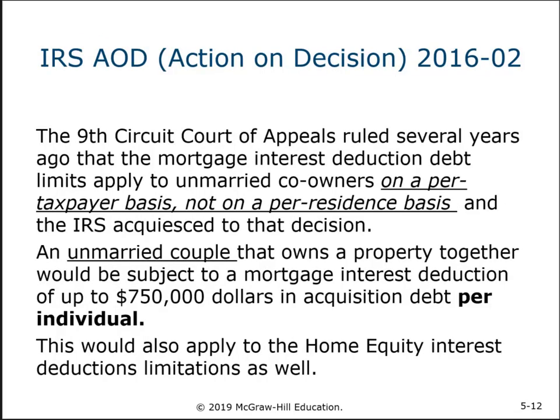The IRS has been held by the courts that the $750,000 limit is on a per-taxpayer basis. So an unmarried couple that owns property together was subject to a $750,000 limit per individual, meaning they could effectively get up to $1.5 million in deductible mortgage interest — whereas if they were married, because married filing jointly is treated as a single individual, it would only be $750,000. This creates a marriage penalty. Also, for home equity loans, you have to add your regular loan and your home equity loan together to see if you're over the $750,000 limit.